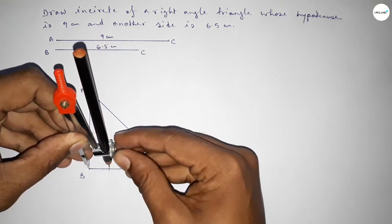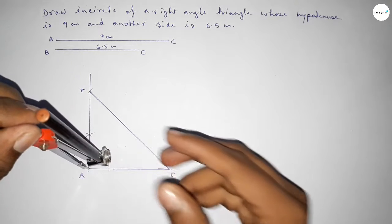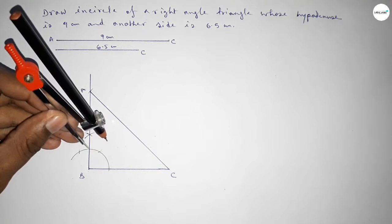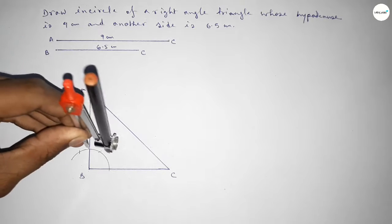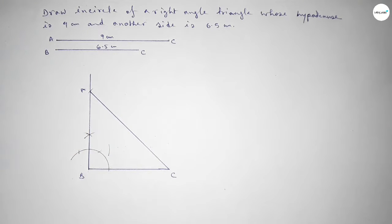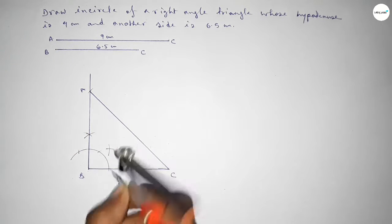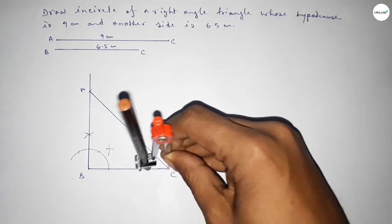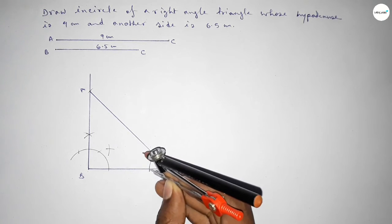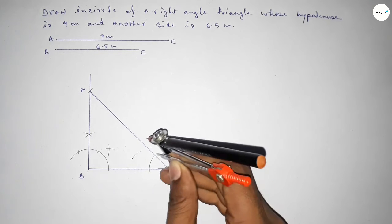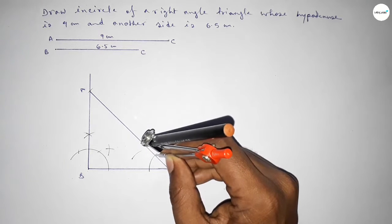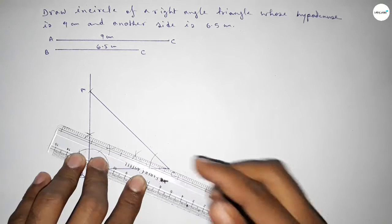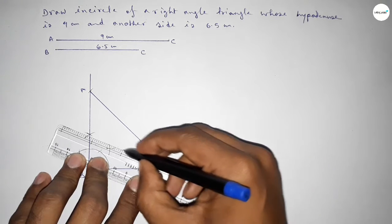To bisect angle BC, taking any same length and drawing an arc, then with the same length putting the compass and cutting here. Again with the same length, putting the compass and cutting here. You can take any length — putting the compass and cutting here. Now joining to get the angle bisector.